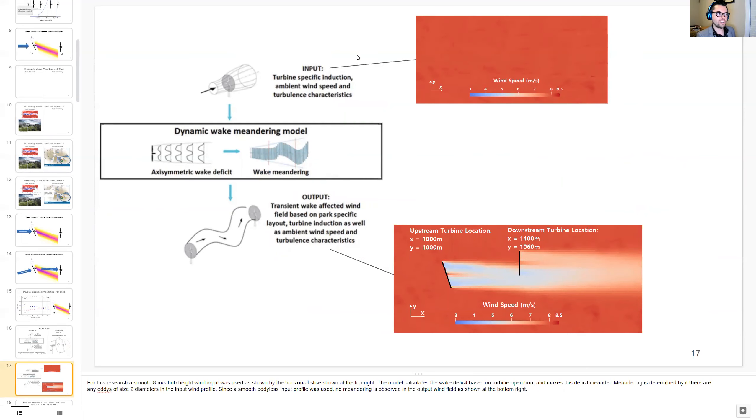Here in my research, I used a smooth eight meter per second hub height wind input, that's shown by this horizontal slice at the top right. The model calculates the wake deficit based on turbine operation, and then makes this deficit meander. Meandering is determined by if there are any eddies of size two diameters in the input wind profile, but since this is a smooth eddyless input wind profile, no meandering is observed in this output wind field as shown at the bottom right.